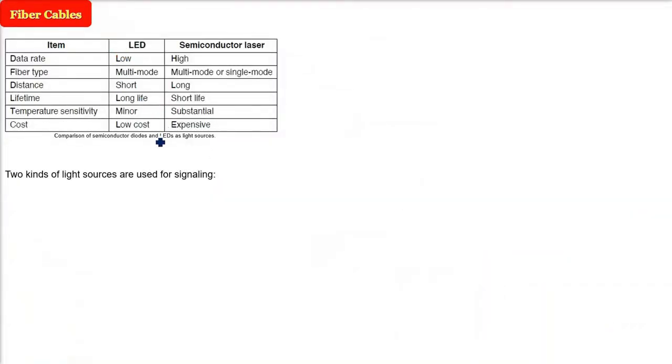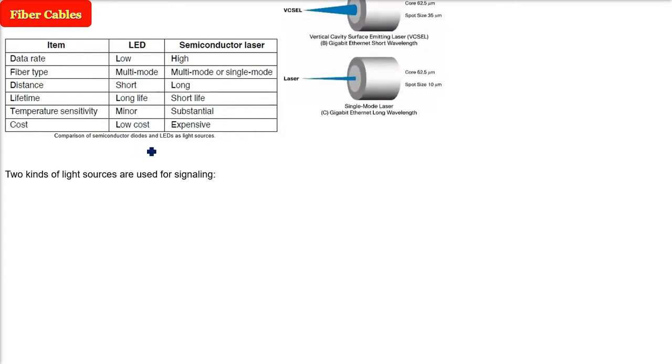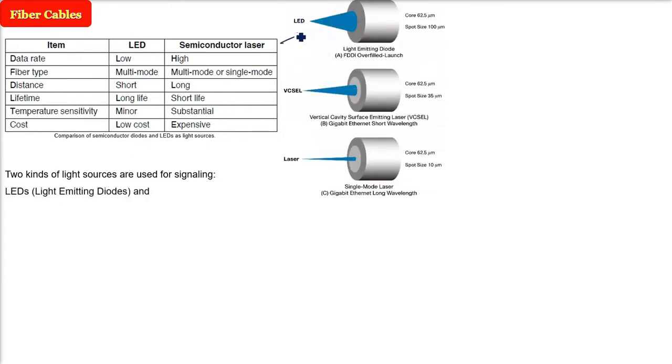There are two kinds of light sources for signaling. First is the LED light emitting diode and the second one is semiconductor lasers. This is a single mode laser for gigabit ethernet long wavelength.